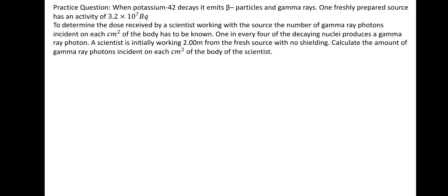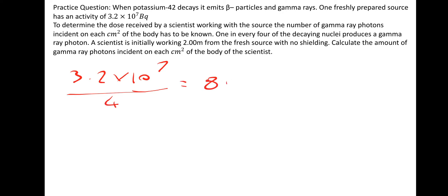When potassium-42 decays, it emits beta particles and gamma rays. One freshly prepared source has an activity of 3.2 × 10⁷ becquerel. One in every four of the decaying nuclei produces a gamma ray photon. A scientist is initially working 2 metres from the fresh source with no shielding. So we need to do 3.2 × 10⁷ divided by 4 this time instead of 5, which gives us 8 × 10⁶ becquerel for the activity.